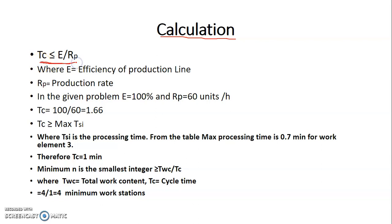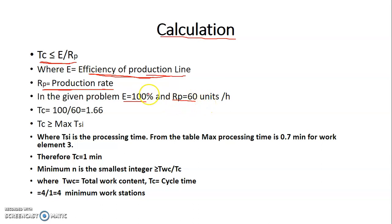The cycle time TC must satisfy the condition: TC ≤ E / RP, where E is the efficiency of the automated production line and RP is the production rate. Since efficiency is not given, we assume E = 100%. The production rate RP is given as 60 units per hour. So TC = 100 / 60 = 1.66 minutes.